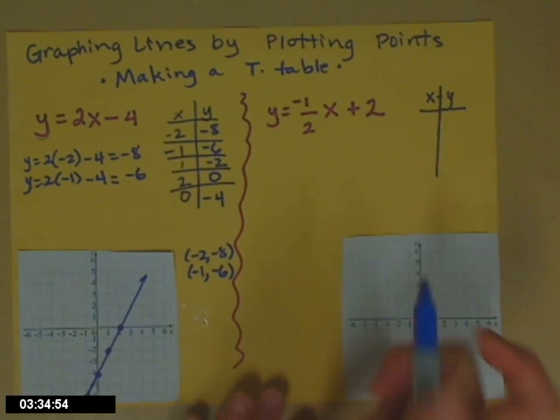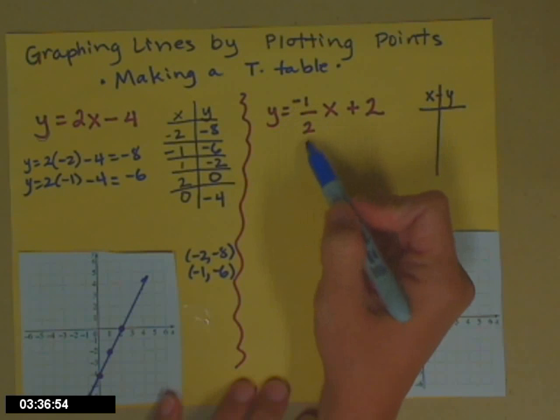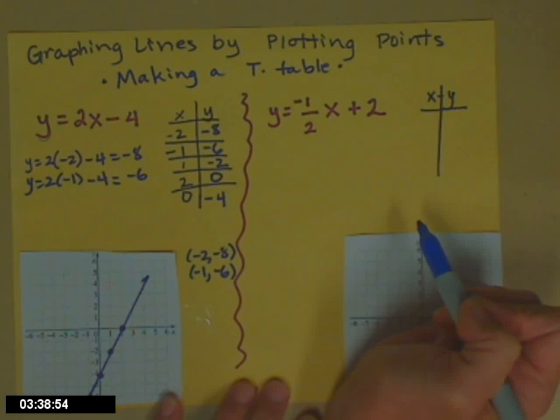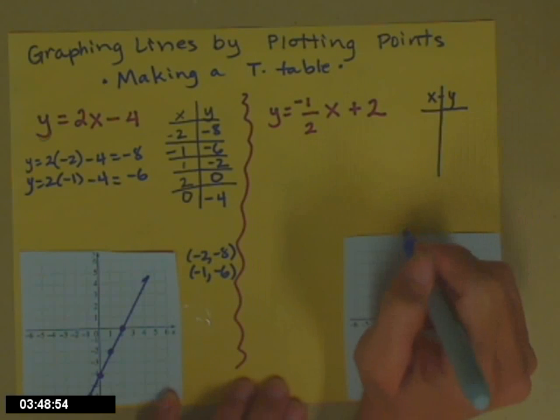So now let's look at my second example. y equals negative 1 half x plus 2. So again, we need to choose some x's. But let's think about the x's that we're going to choose. If we choose x equals 1,